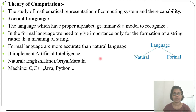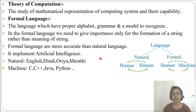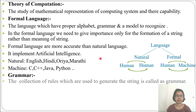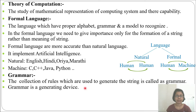Language is of two types: one is natural, another is formal. When a human being is communicating with another human being, that is called natural language. When a human being is communicating with a machine, that is called formal language. Next is grammar: just as natural language follows some grammar, formal language also has grammar. Grammar is a collection of rules which are used to generate strings.